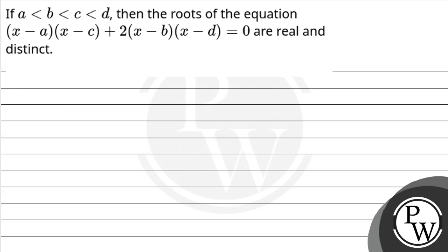Hello, Bacho. Let us see the question. The question says that if A is less than B, less than C, less than D, then the roots of the equation (x minus A)(x minus C) plus 2 times (x minus B)(x minus D) equals 0 are real and distinct.